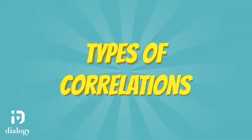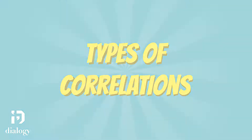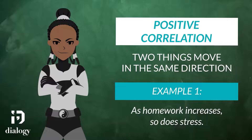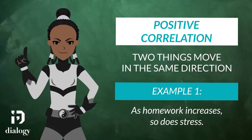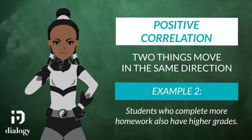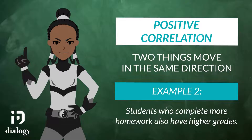There are a few different types of correlations. Positive correlation means that two things move in the same direction — as one thing increases, the other thing increases too. Our example of homework is an example of positive correlation: the more homework students have, the more stressed out they will be. We could also say that the more homework students do, the better grades they have — a positive correlation between homework and grades.